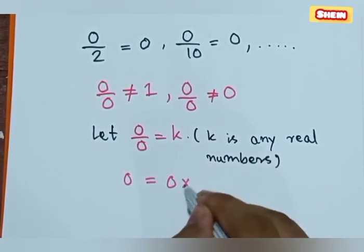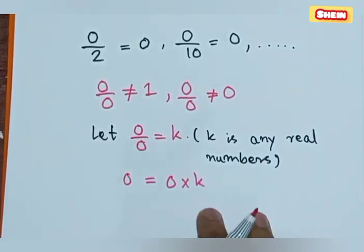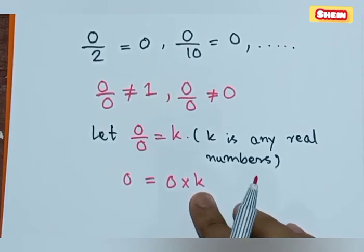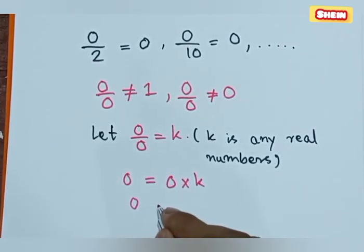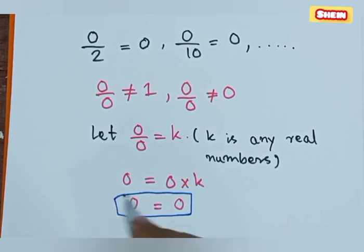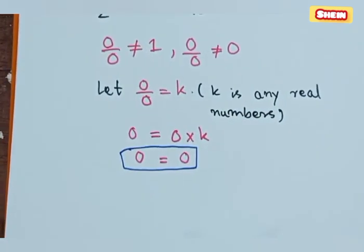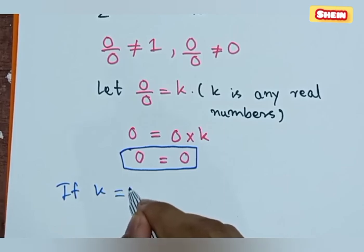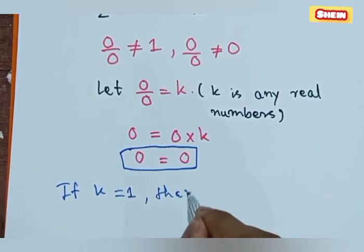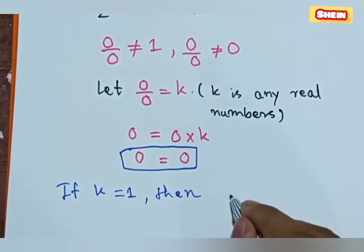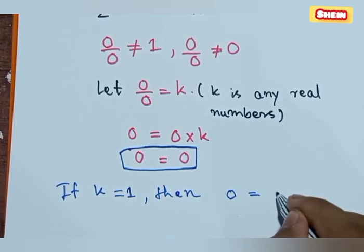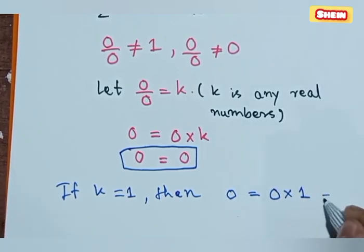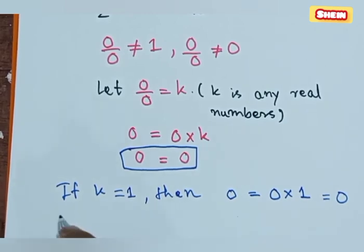Zero is multiplied by zero. Zero is multiplied by zero. If you want to see zero — zero is zero. Zero is equal to zero. Less than zero, zero is one. Zero is equal to zero. Zero is equal to zero. Zero is equal to zero.